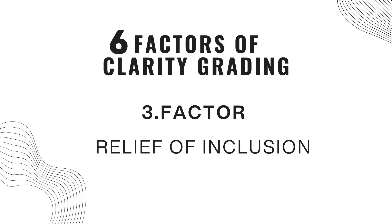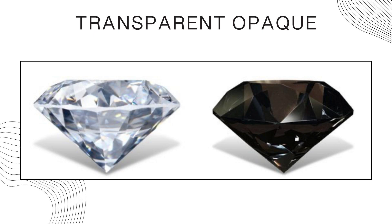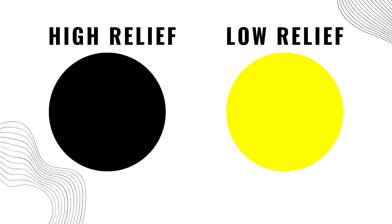The third factor is relief — basically the transparency of the inclusion. Is it very transparent or very opaque? For example, imagine a white board with a big black circle and a yellow circle. We notice the black circle first because it has high relief — it's very contrasting against the white background. The yellow circle has low relief because it is not as contrasting. If an inclusion has low relief, the clarity grade will be higher, whereas a high-relief inclusion results in a poor, lower clarity grade.